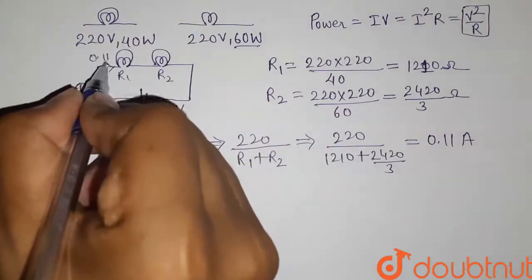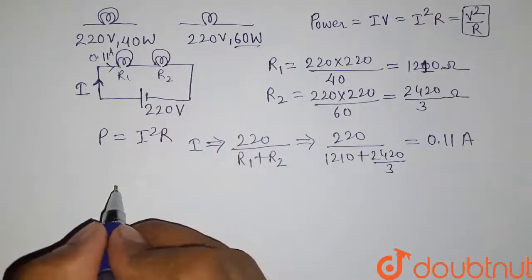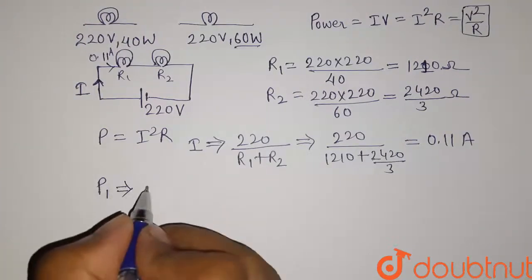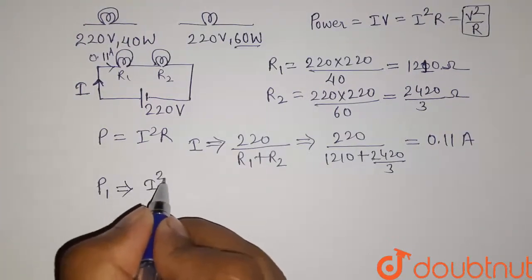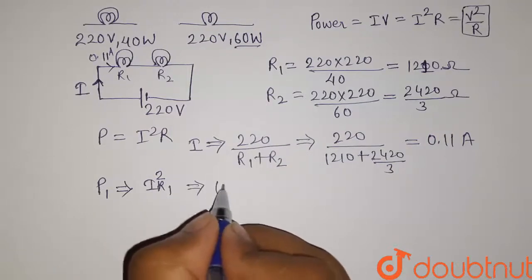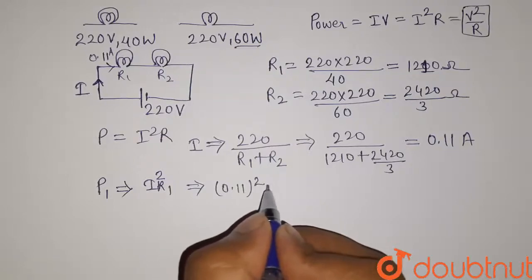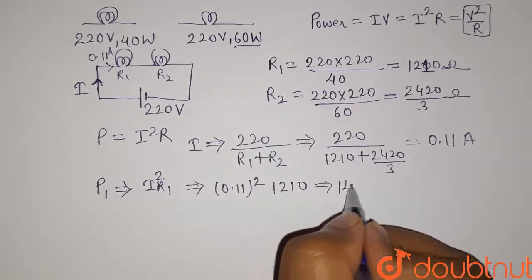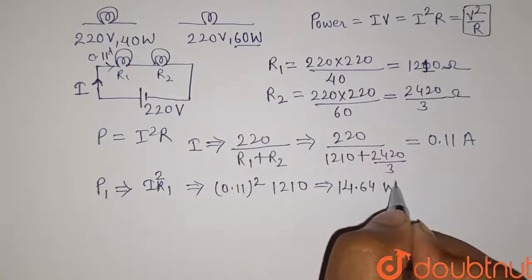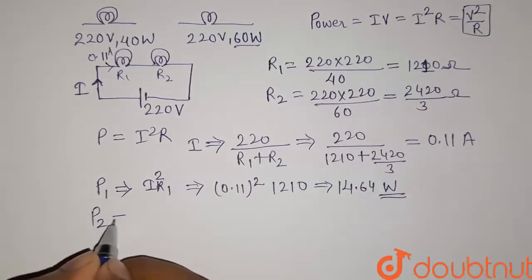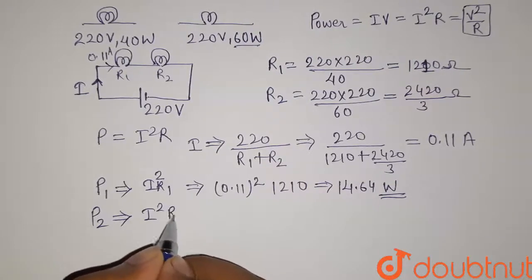The power generated by Lamp 1 = I² × R1 = (0.11)² × 1210 = 14.64 watt. The power consumed by Lamp 2 = I² × R2, where I is 0.11 ampere and R2 is 2420/3 ohm.